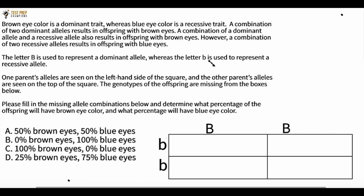One parent's alleles are seen on the left-hand side of the square and the other parent's alleles are seen on top of the square. The genotypes of the offspring are missing from the boxes below.